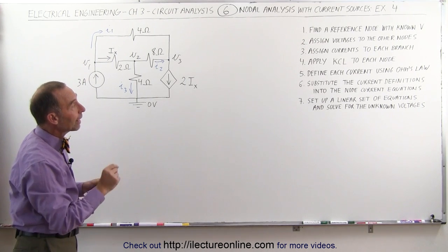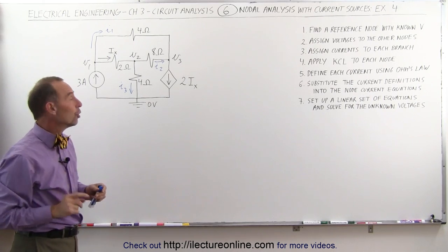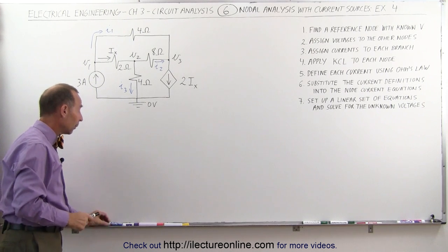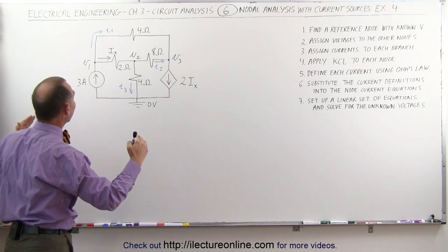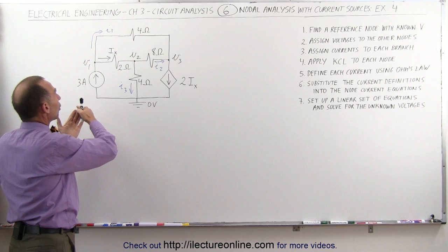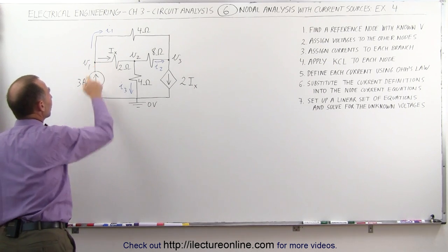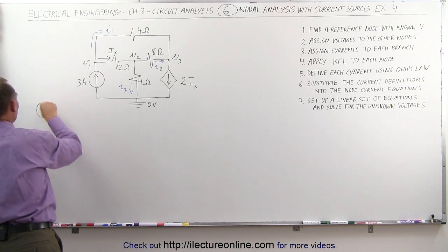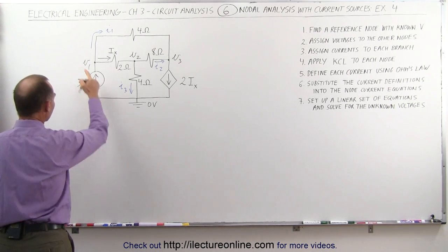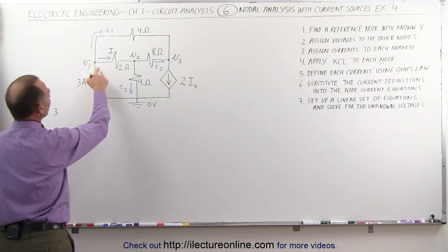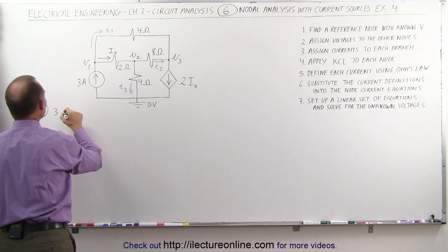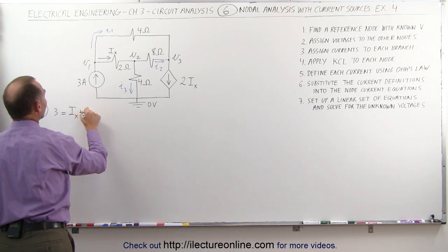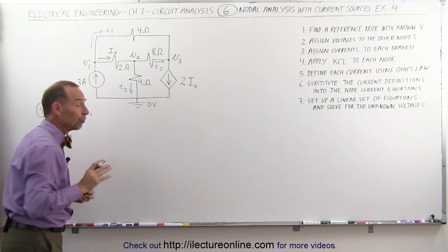Step four: apply Kirchhoff's current law to each of the nodes. Since we have three nodes we'll end up with three equations. We add up all the currents entering a node and set it equal to all the currents leaving. For the first node, we have three amps entering and I sub x and I sub 1 leaving, therefore: three equals I sub x plus I sub 1. That's our first equation.